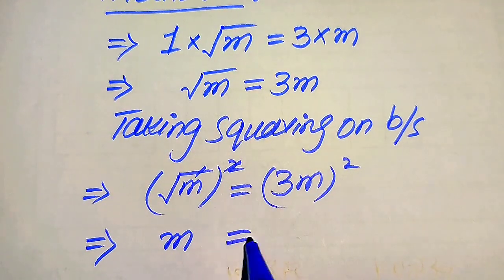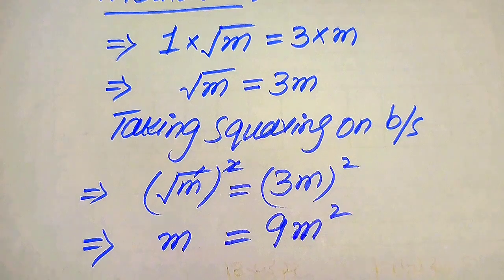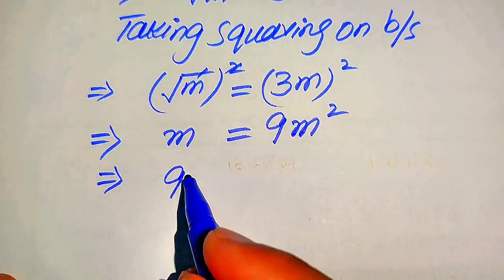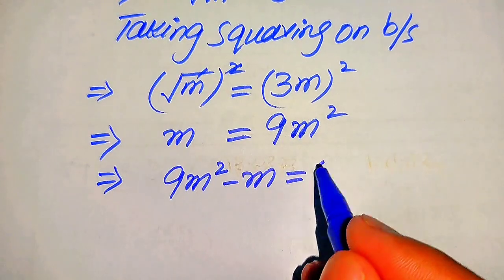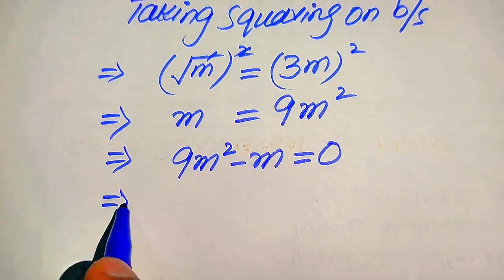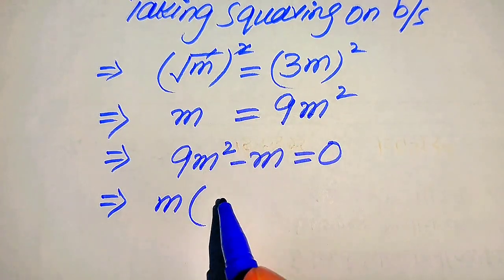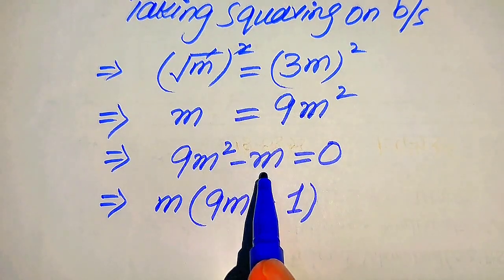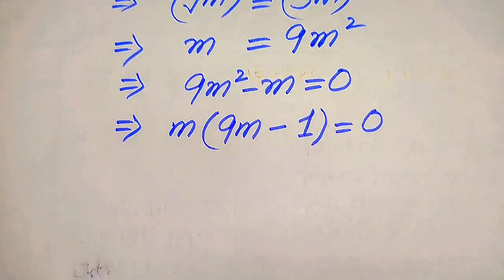The square and the square root cancel on the left hand side, giving us m. On the right hand side, the square of 3 is 9 and the square of m is m squared, giving us m equals 9m squared. Moving m to the right hand side, it becomes negative m, so 9m squared minus m equals 0. Both terms involve m, so we factor out m to get m(9m minus 1) equals 0.